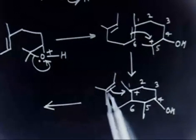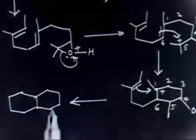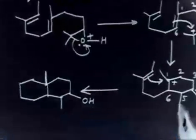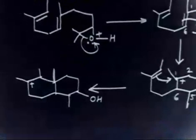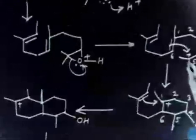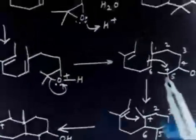Once again, counting 1, 2, 3, 4, 5, 6 — you will have a 6-membered ring on this side also. Here I have a 6-membered ring, here I have a methyl group, here I have an OH group. On carbon number 1 you have a methyl group attached, and this carbon will contain a positive charge. On carbon number 5, I have 2 methyl groups attached.